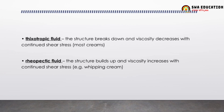Thixotropic fluid is one where the structure breaks down and viscosity decreases with continued shear stress. Rheopectic fluid is the opposite: the structure builds up and viscosity increases. The example for thixotropic is whipping cream — when you whip it, the structure breaks down and viscosity decreases. The example for rheopectic fluid is also whipping cream, where structure builds up as viscosity increases.